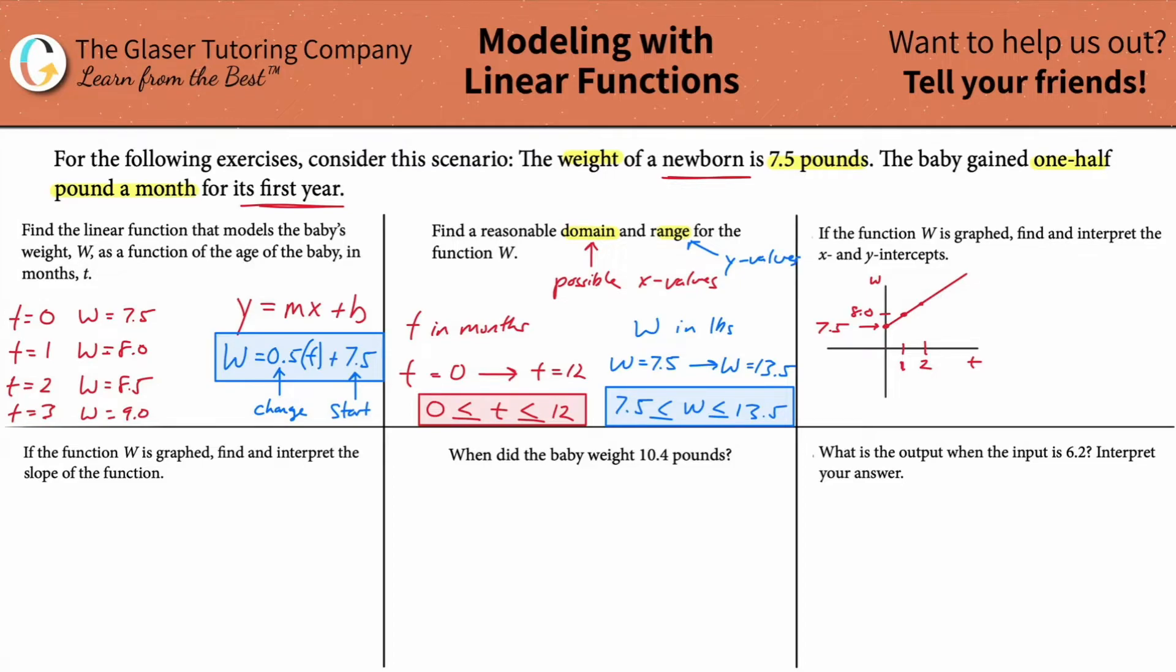Alright. So find and interpret the X and the Y intercepts. Okay. So the Y intercept here, we already know is 7.5. So the 7.5 is equal to the Y intercept. And that's the baby's weight at T equals zero, at the start period of whatever we're modeling. Now the X intercept, this thing, this graph here, as you can see, would kind of travel all the way down here and it would eventually intersect that particular X axis at some negative point in time. So I'll find it, but the meaning of it probably isn't, there probably is no meaning to it.